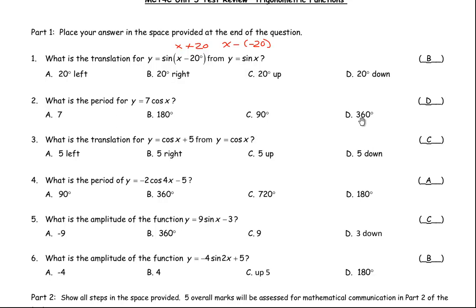Number 3 asks: what is the translation for y equals cos x plus 5 from y equals cos x? The plus 5 — it's a matter of whether it's left, right, up, or down. The 5 is added to the entire function, which is the same as adding it to the y values, so that's why it would shift 5 up. So C is the correct answer for number 3.